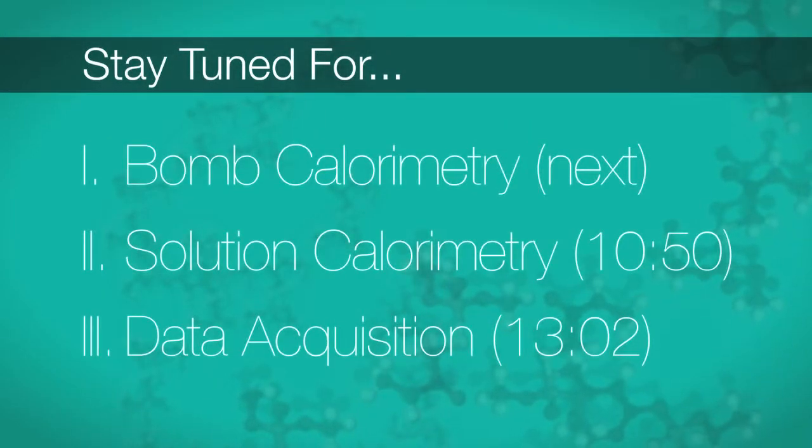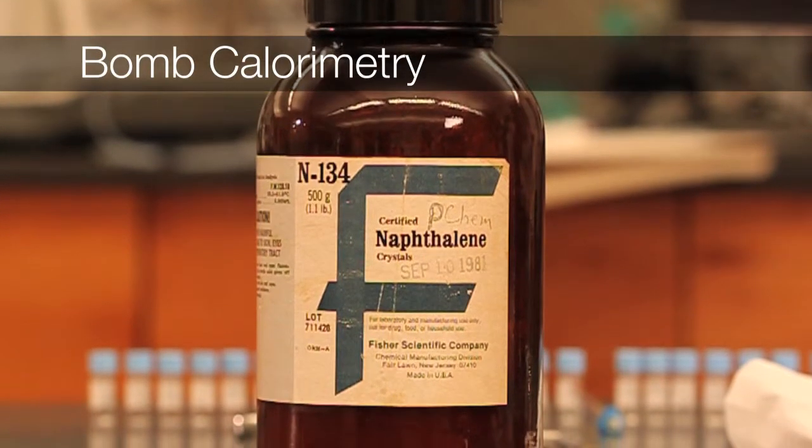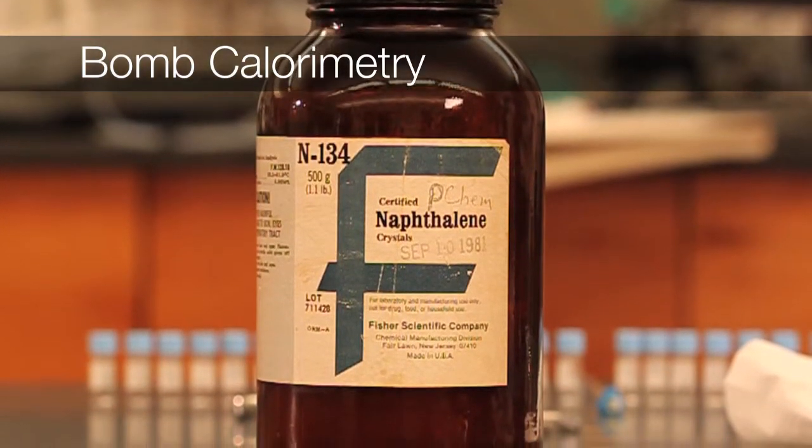The remainder of this video has three parts: bomb calorimetry, solution calorimetry, and data acquisition. You will measure the heat of combustion of naphthalene using bomb calorimetry, a type of constant volume calorimetry.